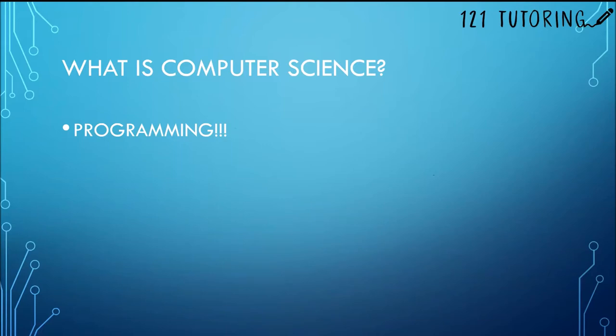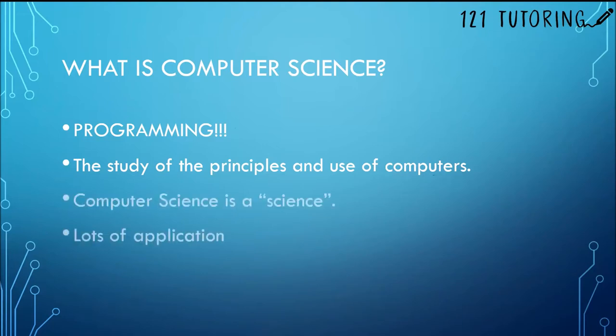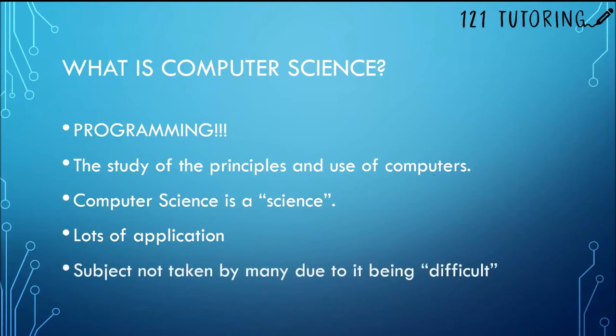Looking through an Oxford dictionary will tell you that computer science is actually the study of the principles and use of computers. Many people forget that computer science is actually a science which means that there is a lot of application of the knowledge assessed in examinations much like physics. Due to this, a lot of people tend not to pick it as they think it is difficult.